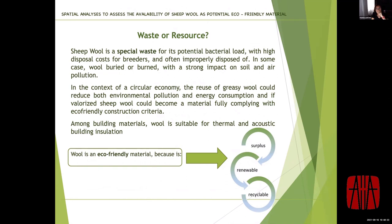Wool is often improperly disposed of by burning or burying, with serious consequences for environmental pollution concerning air quality. However, wool has valuable properties: it is the most performant natural thermal insulation material, with good elasticity, tensile strength, elevated hygroscopicity, and good fire resistance. The reuse of greasy wool could reduce both pollution and energy consumption, making sheep wool a resource for green building. Wool as insulation in rural buildings could improve microclimatic control — relevant for agro-industrial processes such as intensive breeding facilities and wineries where temperature control is of key importance. Sheep wool can also absorb dangerous substances such as nitrogen dioxide.